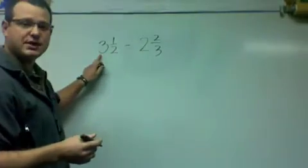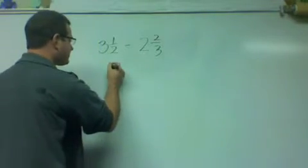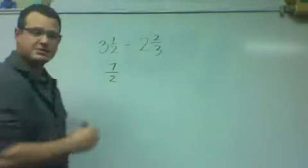2 times 3, 6, plus 1, 7. This becomes 7 halves.